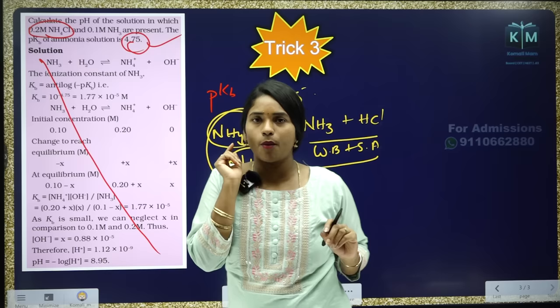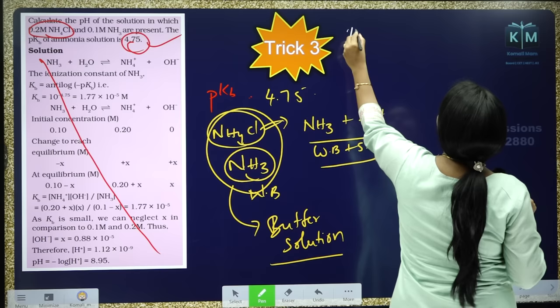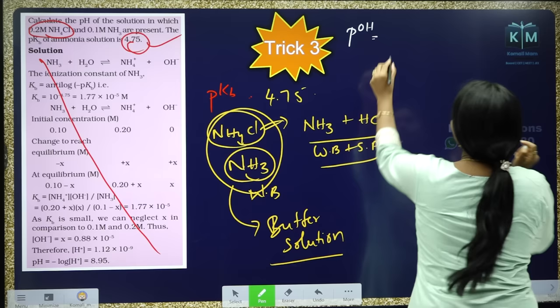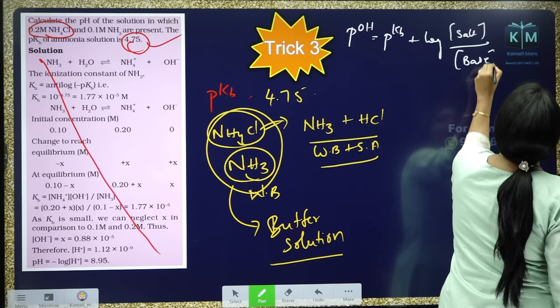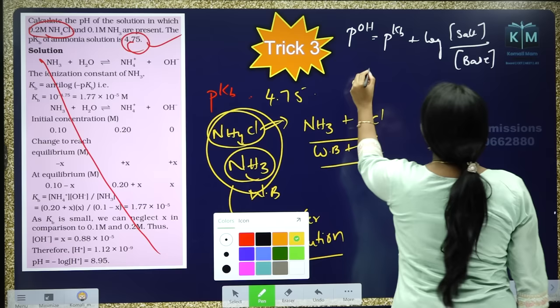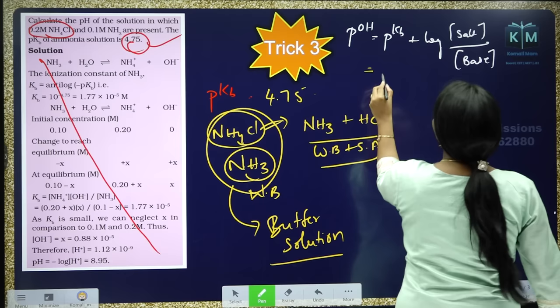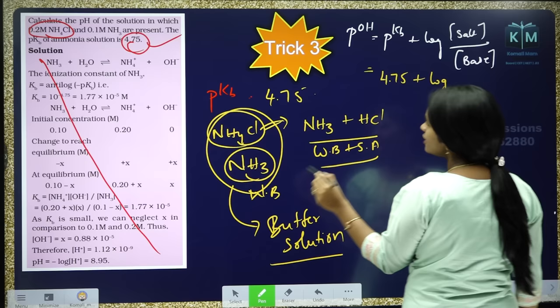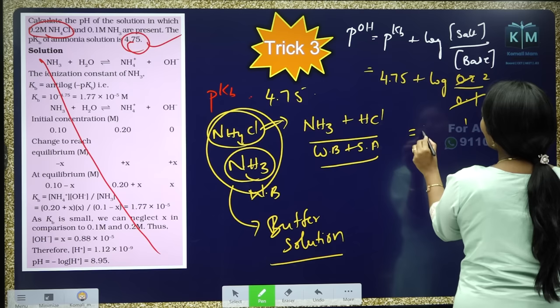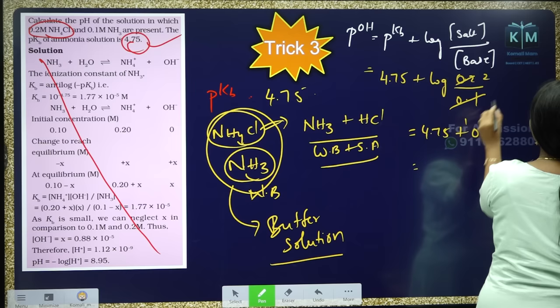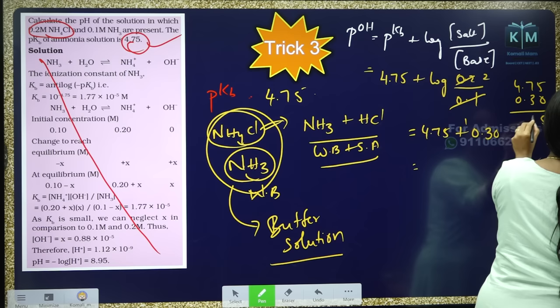For a buffer solution, without doing a long procedure, you can solve easily using a formula. This is a basic buffer. The formula for basic buffer is: pOH = pKb + log(salt concentration / base concentration). The pKb given is 4.75. Substitute: pOH = 4.75 + log(0.2 / 0.1) = 4.75 + log 2 = 4.75 + 0.30 = 5.05.